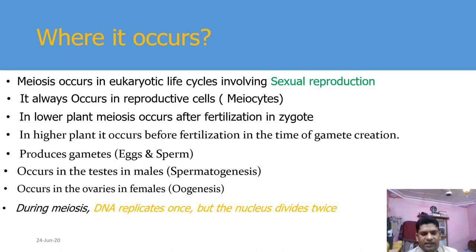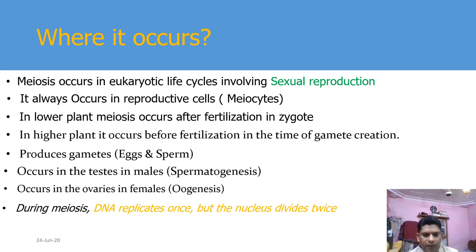Where does meiosis take place? Meiosis occurs in eukaryotic cells in which sexual reproduction takes place. It occurs for the production of reproductive cells or meiocytes, and the purpose is the formation of gametes. It occurs in higher plants before fertilization, and in lower plants and human beings also before fertilization, in order to produce haploid gametes — sperms through spermatogenesis in male testes, and ova in case of ovaries of females through oogenesis. During meiosis, DNA replication takes place only once, but the nucleus divides twice.